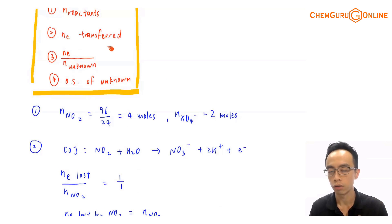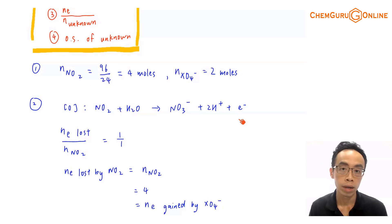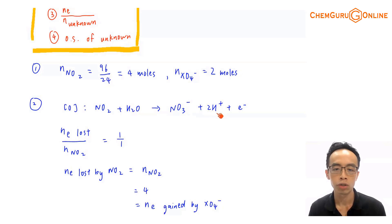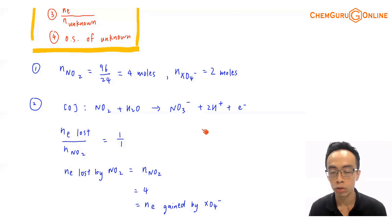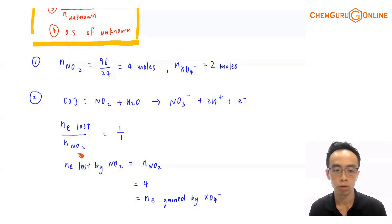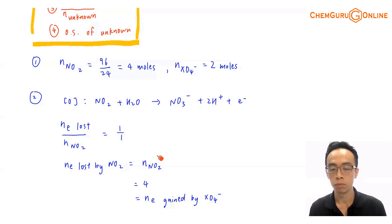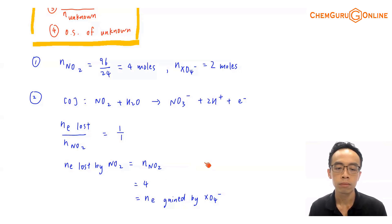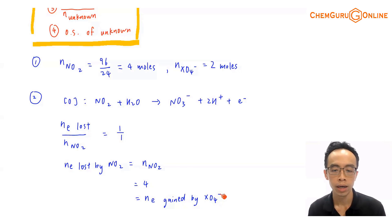Step 2: find the moles of electron transferred. I can balance the oxidation half equation in acidic medium: NO2 + H2O → NO3⁻ + 2H⁺ + e⁻. The mole ratio of electron to NO2 is 1:1, so the number of moles of electron lost by NO2 equals the moles of NO2, which is 4 moles. Importantly, the moles of electron lost by NO2 equals the moles of electron gained by XO4⁻.